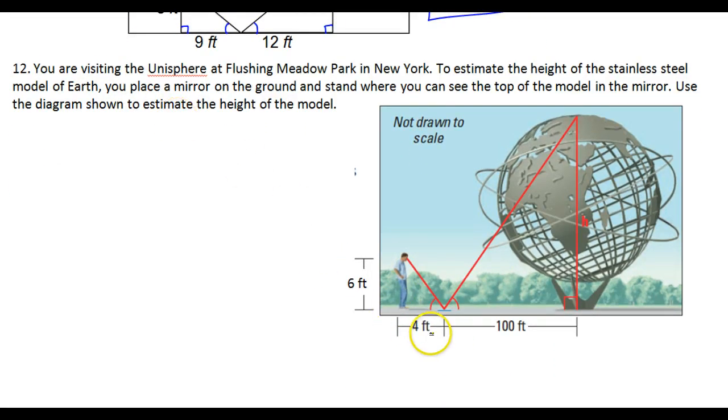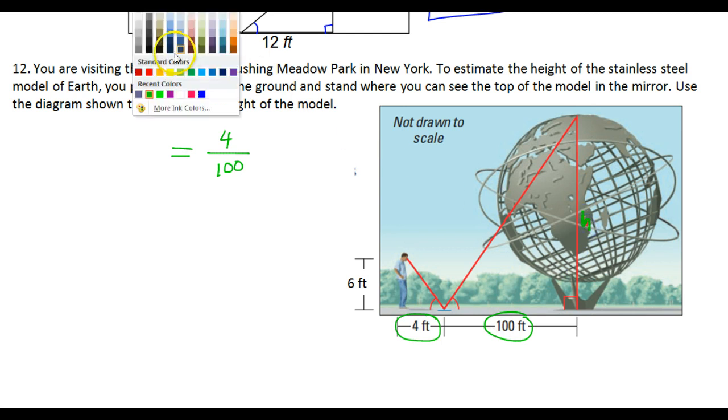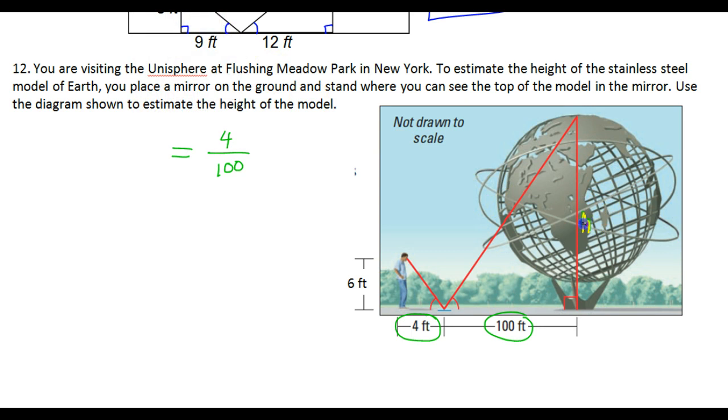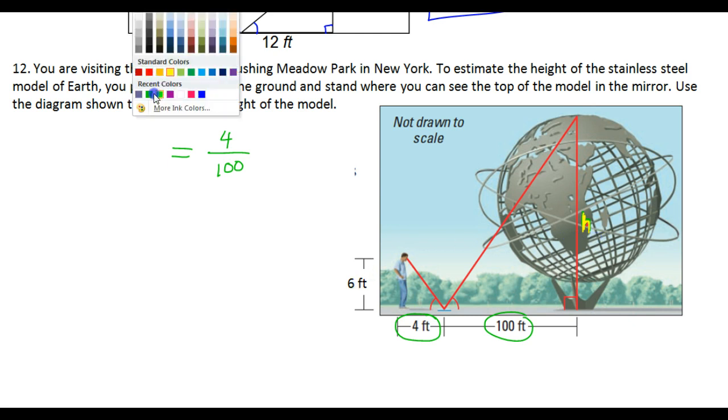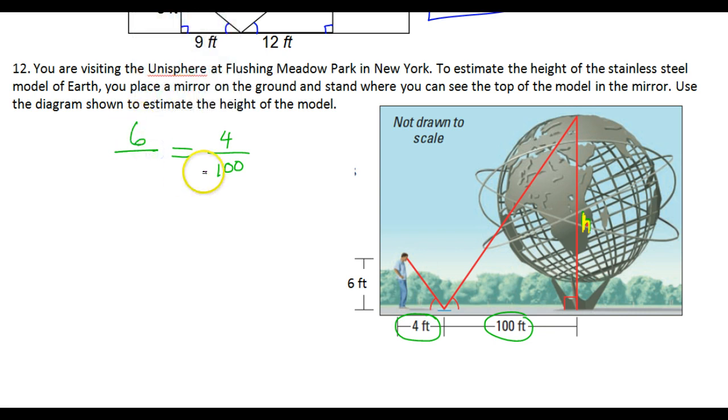So once again, let's start by doing a pair of corresponding sides that we know. So the four feet and the 100 feet, those are definitely going to be corresponding. So let's go ahead and set that up. So we have 4 over 100 feet. And this says H over here. So we're trying to get H. So anyway, we did 4 over 100. Now the 6 and the H are corresponding sides. So we'll have to do 6 feet over H.